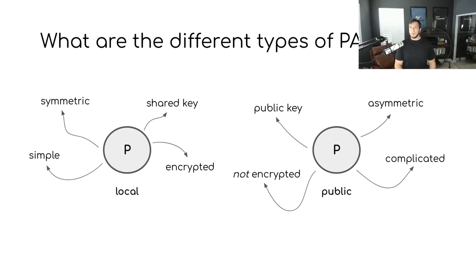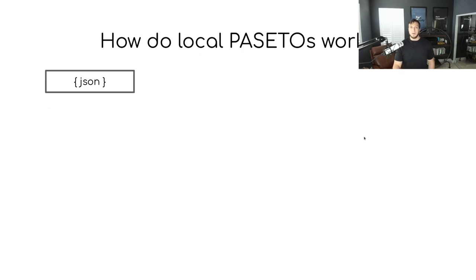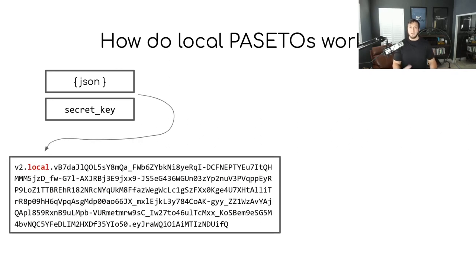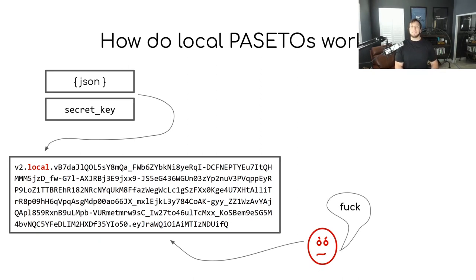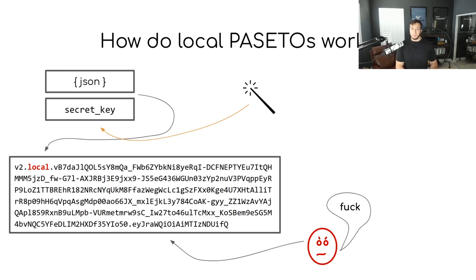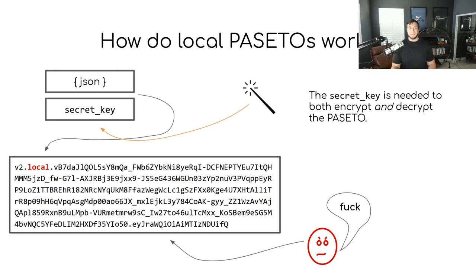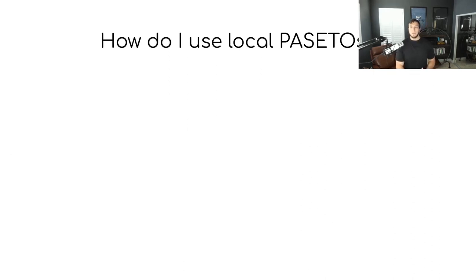How do local PASETOs work? You have some JSON data you want to securely transmit, and you have a secret key — basically a long, randomly generated string. By combining those two things together with a PASETO developer library, you're able to create a local PASETO. Notice that the purpose segment of this PASETO is set to 'local' — that's how you can tell what type you're working with. The real magic is happening at the cryptography level: the secret key is needed both to create the PASETO, which encrypts the JSON contents, and to decrypt the PASETO.